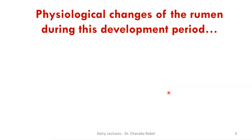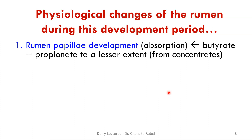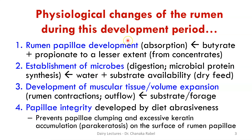Regarding the transition from pre-ruminant to ruminant, we talked about four aspects: rumen papillary development, establishment of microbes, development of muscular tissue, and papillary integrity. I went into detail about papillary development — when it starts and the volatile fatty acids that affect it. Today we'll talk about establishment of microbes in a bit more detail.